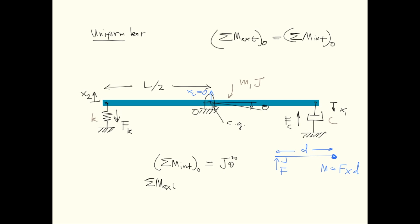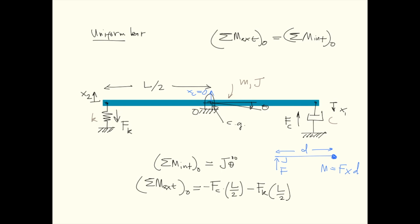The resultant of the external moments at point O is the damper force multiplied by its arm length L over 2, and this must be negative, plus the spring force multiplied by its arm length L over 2, also negative. So we have minus Fc times L over 2 minus Fk times L over 2. The damping force is C multiplied by x1 dot, and the spring force is K multiplied by x2, giving minus C x1-dot times L over 2 minus K x2 times L over 2.